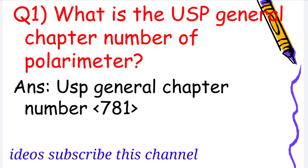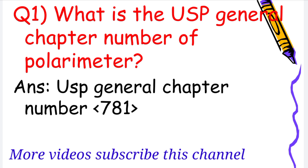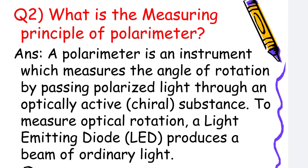Question number 1 is: what is the USP general chapter number of polarimeter? The answer is USP general chapter number 781. Next: what is the measuring principle of polarimeter? A polarimeter is an instrument which measures the angle of rotation by passing polarized light through an optically active substance.